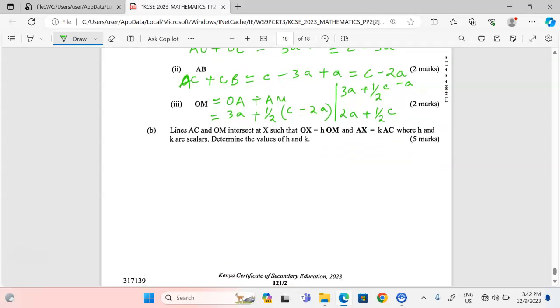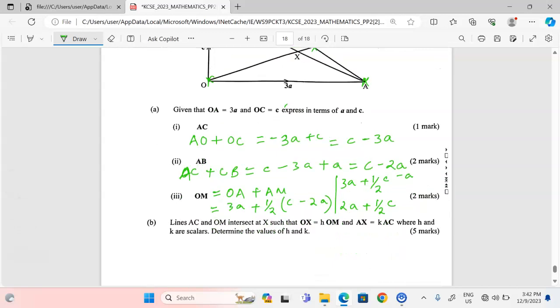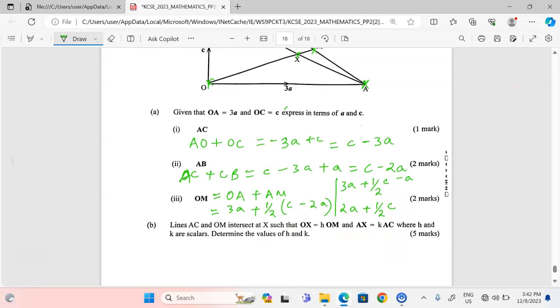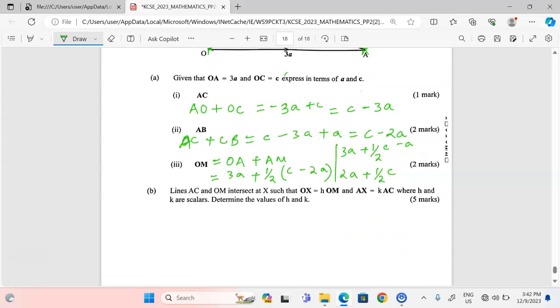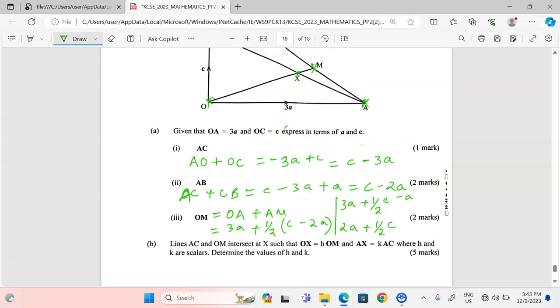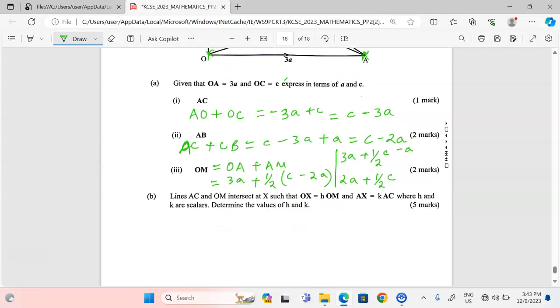The last part says line AC and OM intersect at X, just as shown. They intersected at X such that OX equals h·OM and AX equals k·AC, where h and k are scalars. Determine the values of h and k. We're going to determine these scalars by expressing vector OX in two ways.